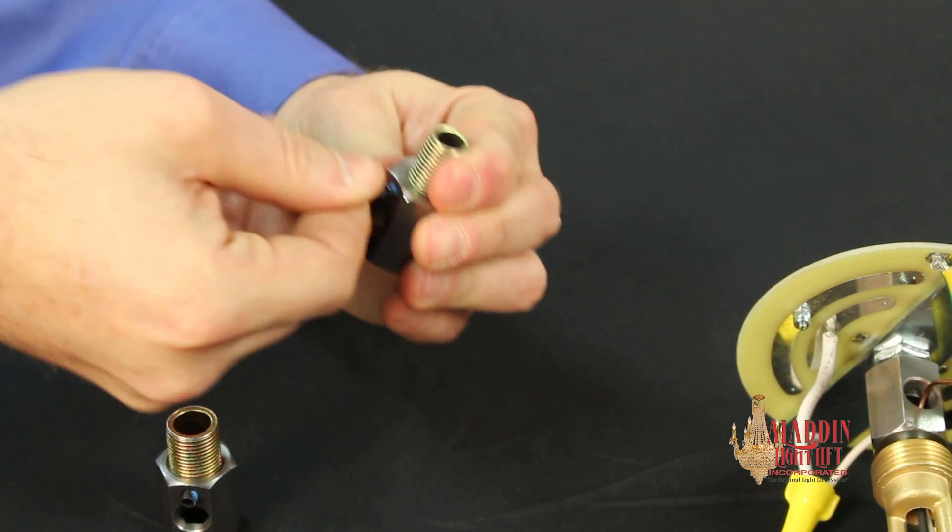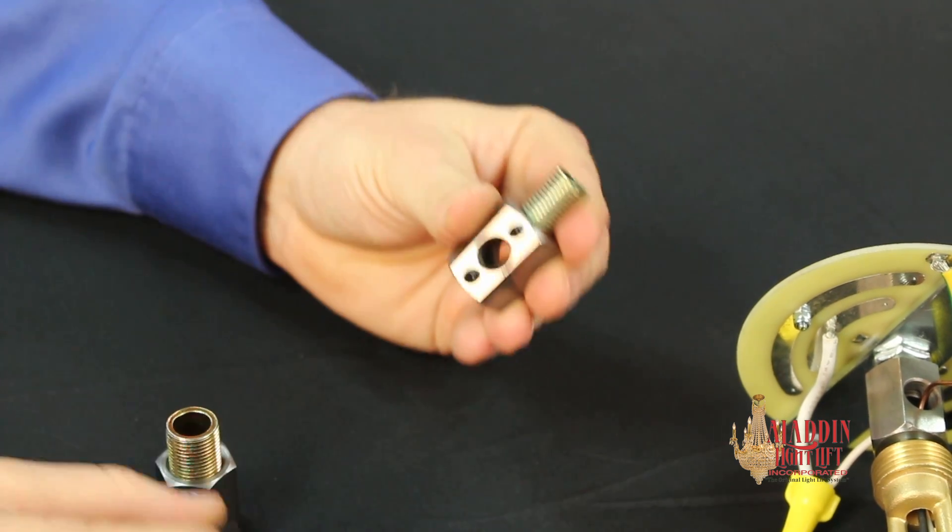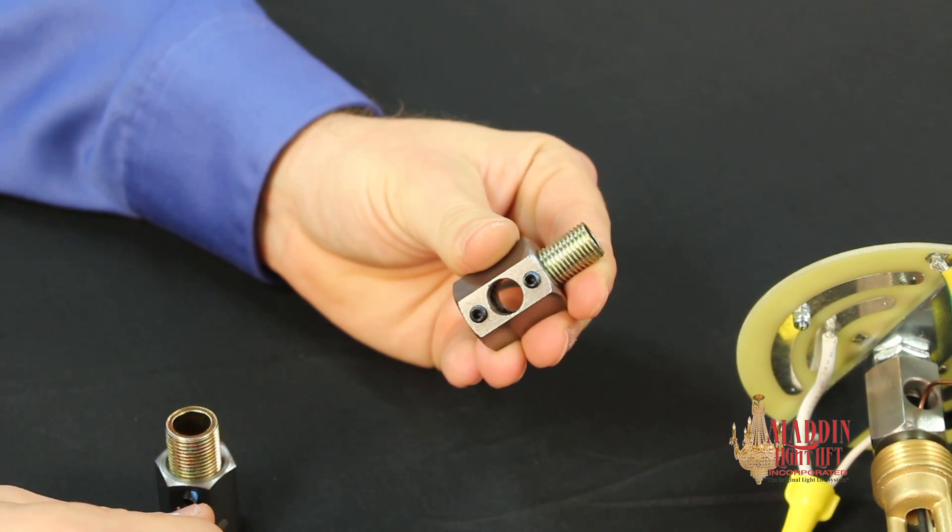Aladdin's fixture couplers utilize set screws to keep any fixture rotation from affecting the connection.